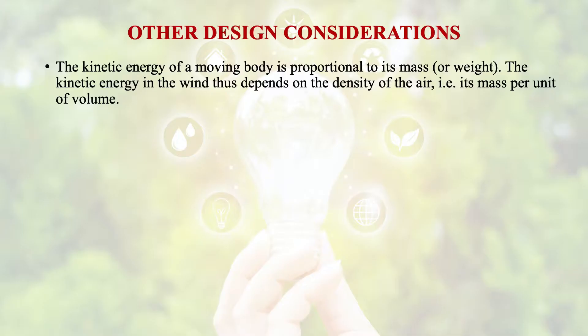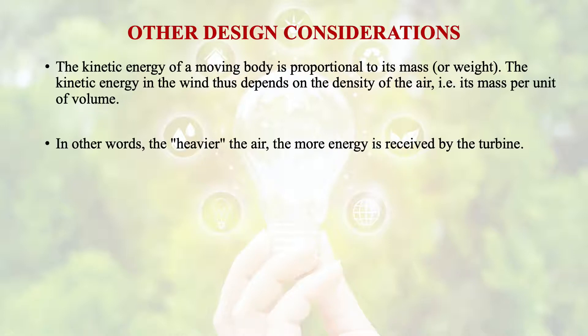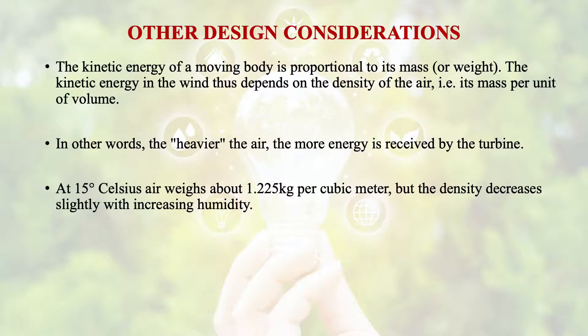Some other design considerations relate to kinetic energy. The kinetic energy of a moving body is proportional to its mass. The kinetic energy in the wind is therefore dependent upon the density of air, which is mass per unit of volume. In other words, the heavier the air is, the more energy will be received by the turbine. Typically, the weight of air at 15 degrees centigrade is about 1.225 kg per cubic meter.